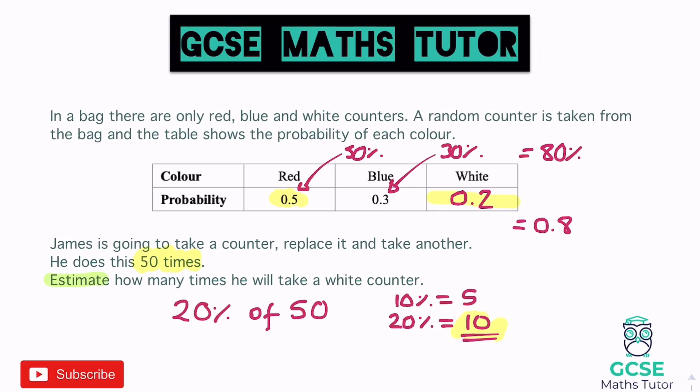So that's this question sorted. Find the missing decimal in the table — all probabilities add up to 1 or 100%. Then look at the second part of the question and think about what percentage of what it's asking. Here it said 50 times, and white was 20% or 0.2, so we worked out 20% of 50.